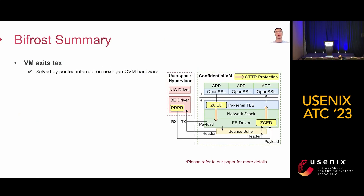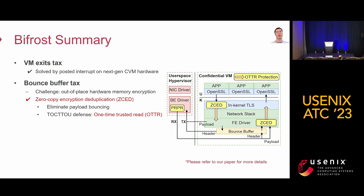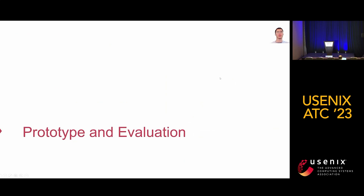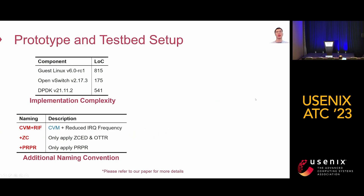In summary, since VM exit tax is addressed by posted interrupt on next-generation hardware, we focus on the other two taxes. The bounce buffer tax is largely reduced by ZcedPneuma by eliminating payload bouncing and defending against TOCTOU attacks using OTTR. Packet processing tax is significantly reduced by PRPR, which offloads packet reassembly logic to the network IO backend. We build a prototype for BFrost with only 800 lines of code in the guest Linux and 700 lines in the IO backend. CVM plus RAF denotes reduced interrupt frequency optimization, plus ZC applies the first two techniques, and plus PRPR applies the third technique.